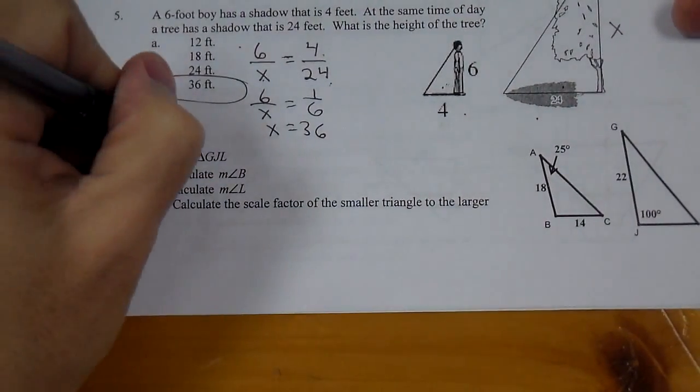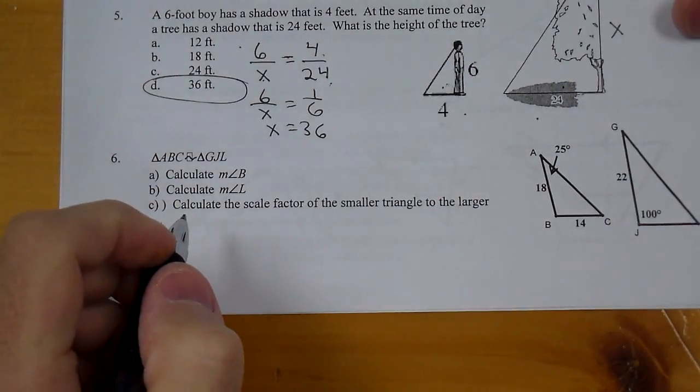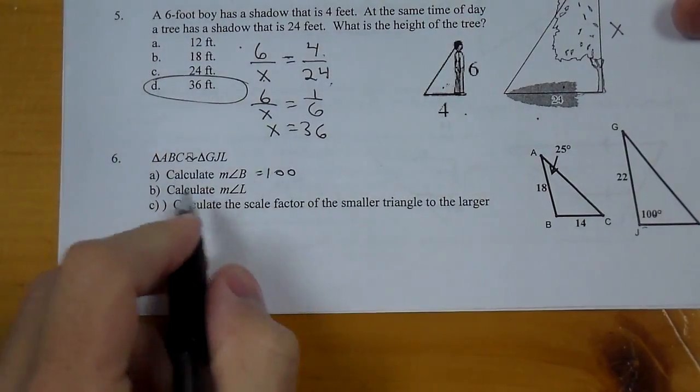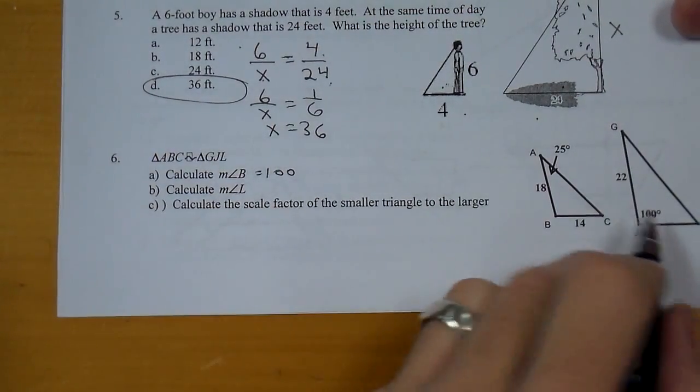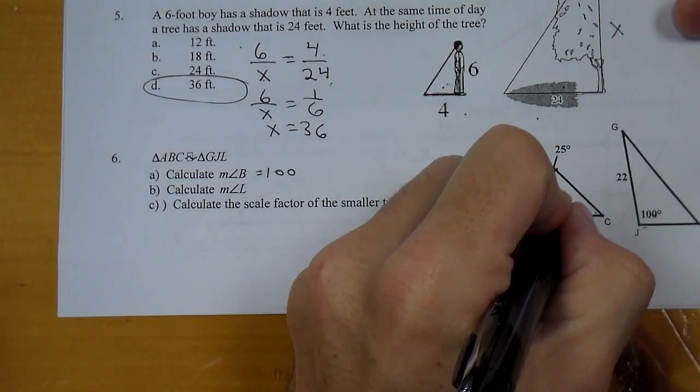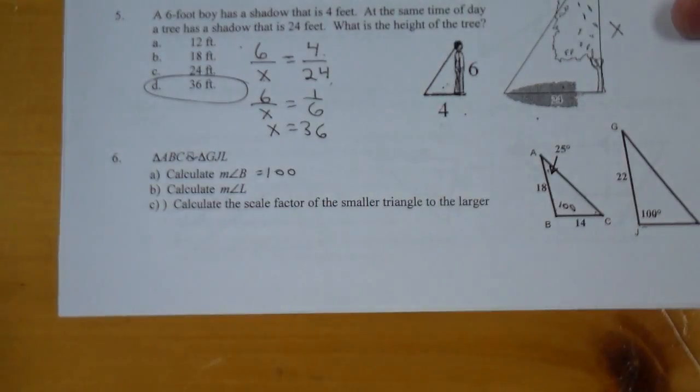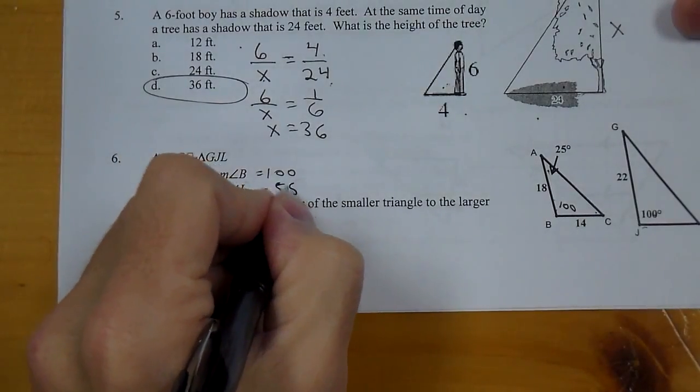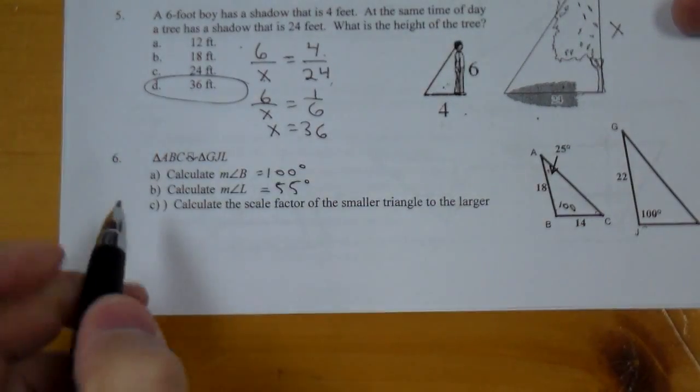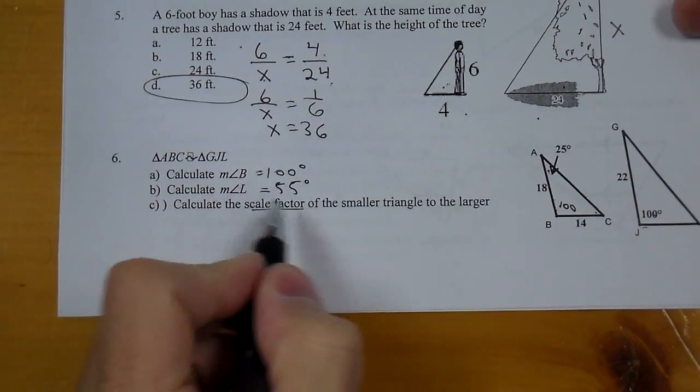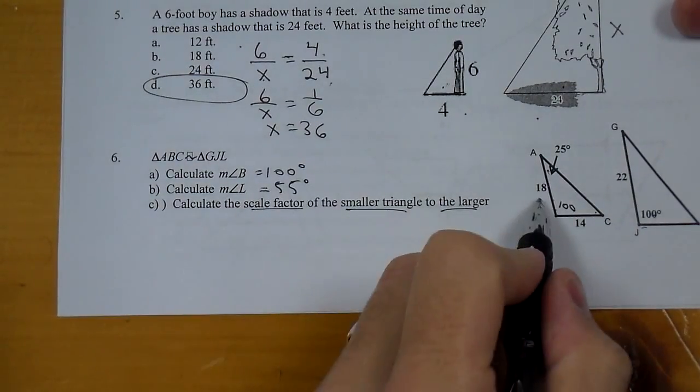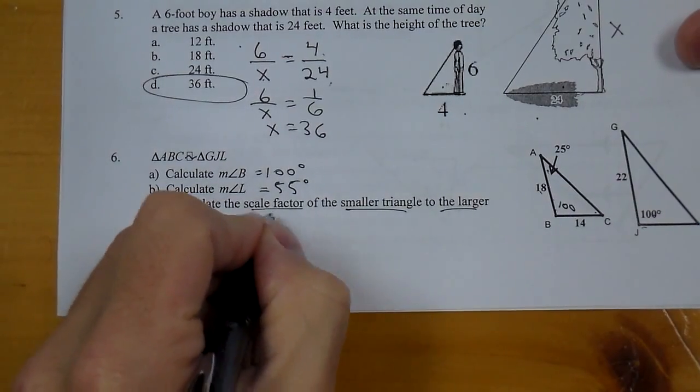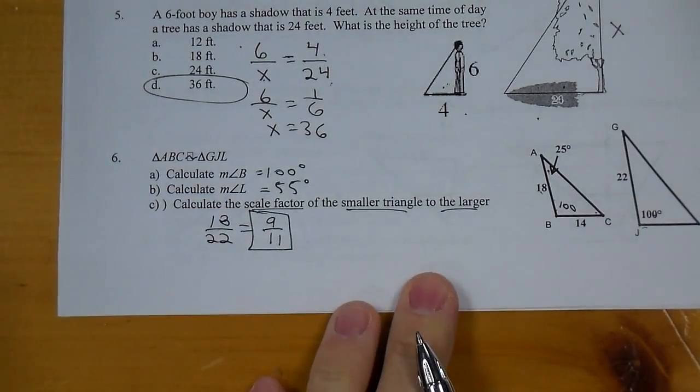For number 6, we should have they are similar. We need angle B. Angle B is going to be corresponding to J. So angle B is 100 degrees. Angle L is corresponding to C. Well, if I know this is 100, and these two together is 125, if we subtract that from 180, angle L is 55 degrees. Last part, they want the scale factor from the smaller to the larger. So we go 18 over 22, which we always reduce, and it comes out to be 9 over 11 is our scale factor.